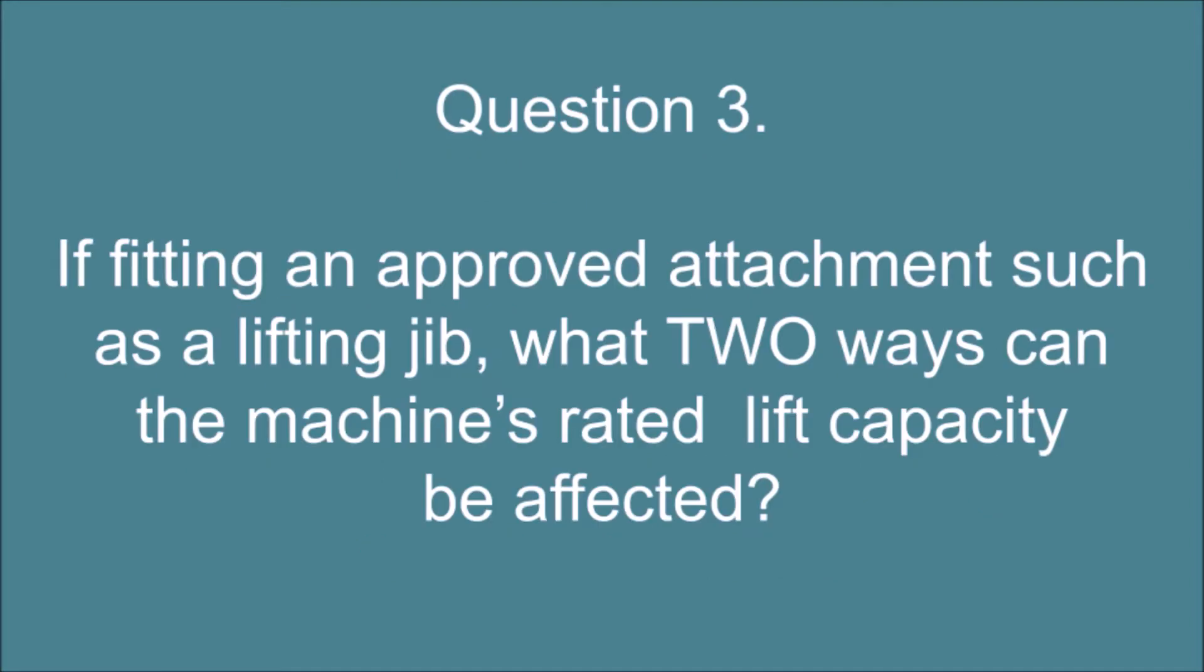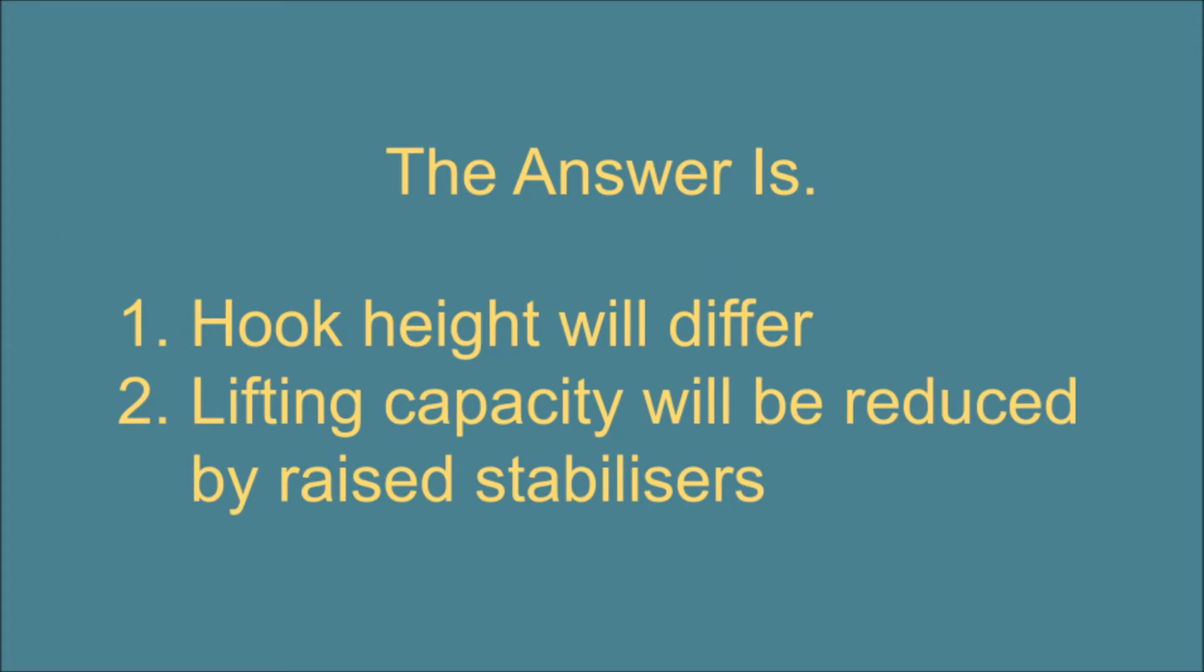Question 3. If fitting an approved attachment such as a lifting jib, what two ways can the machine's rated lift capacity be affected? The answer is: 1. Hook height will differ. 2. Lifting capacity will be reduced by raised stabilizers.